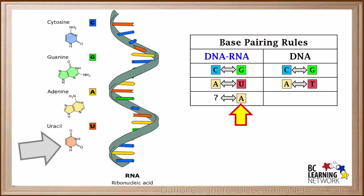So if RNA has an adenine, what will it pair up with in DNA? Remember DNA has thymine rather than uracil. So an adenine on RNA will pair up with a thymine on DNA.